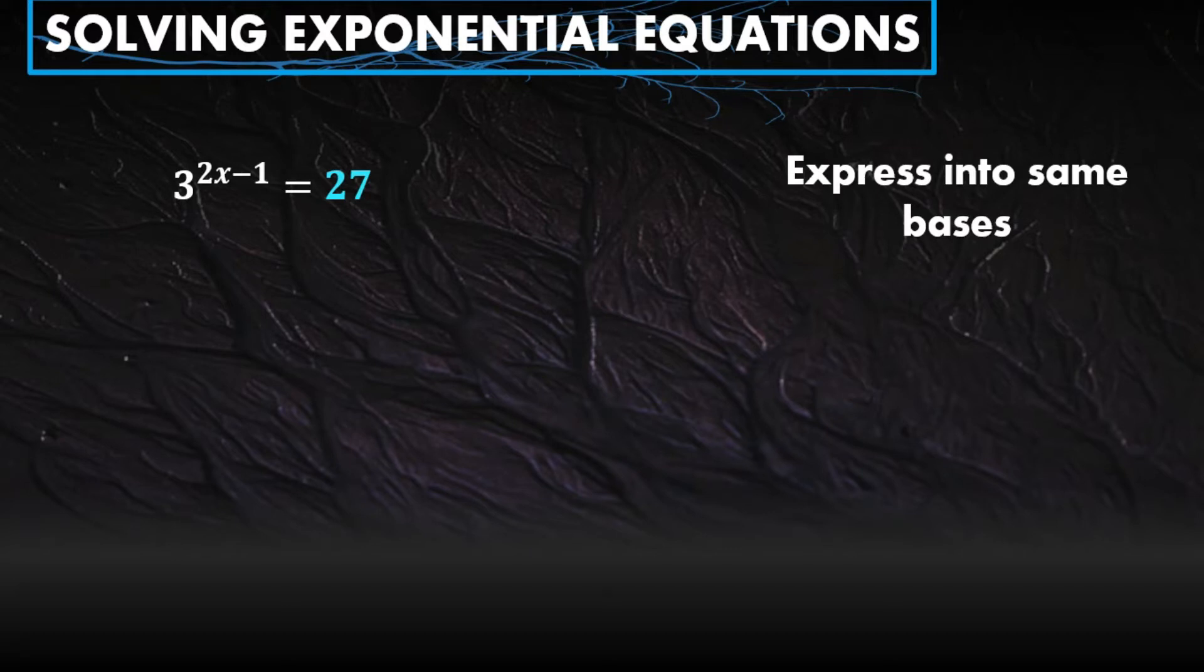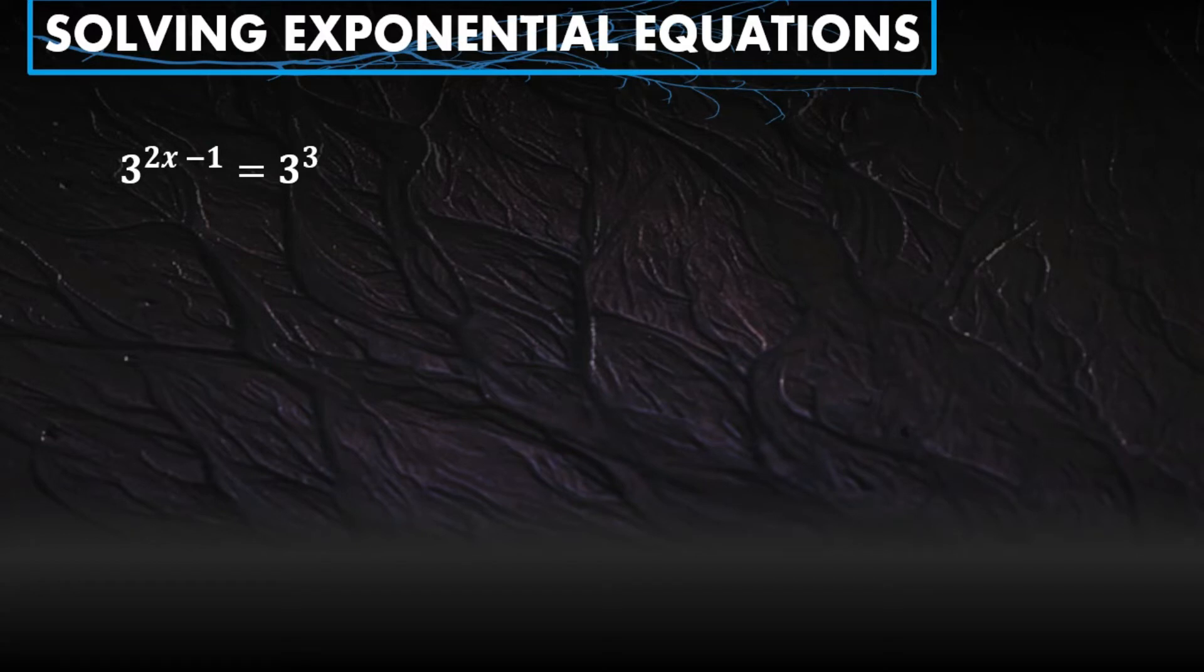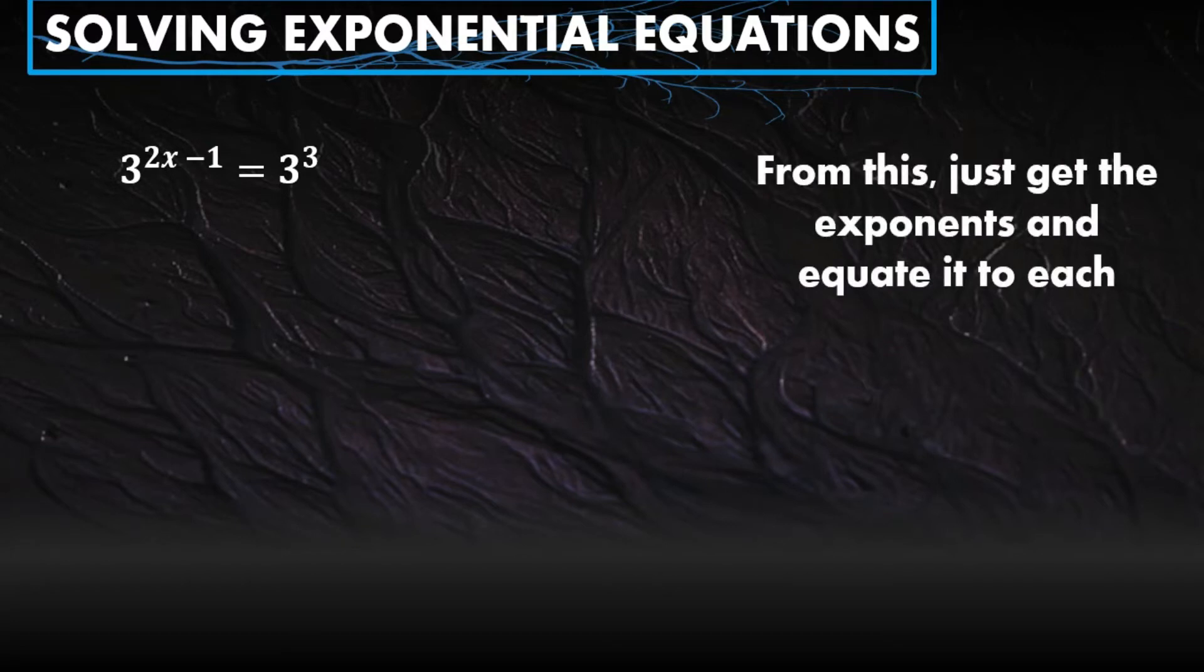Start with the given always. Since they're different, we will express the expressions into same bases. When expressing exponential expressions to have the same base, the easiest way is to find the lowest possible base. For 3, there's no other base we can think of except 3. When it comes to 27, you can make it 3 cubed, because 3 times 3 times 3 is 27. So we can make 27 into 3 cubed. After that, use 3 cubed instead of 27. From this, just get the exponents and equate them.